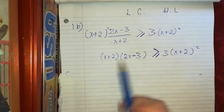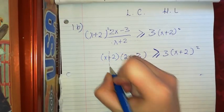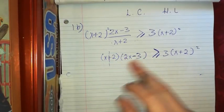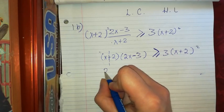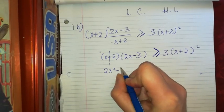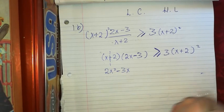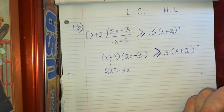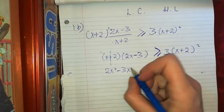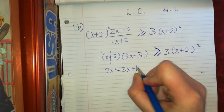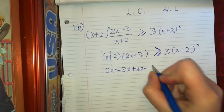Now I have to multiply this out. I have one bracket by another bracket, so I split the first bracket by the second: x by 2x gives me 2x squared, then minus 3x; and plus 2 by 2x gives me plus 4x, and then minus 6.